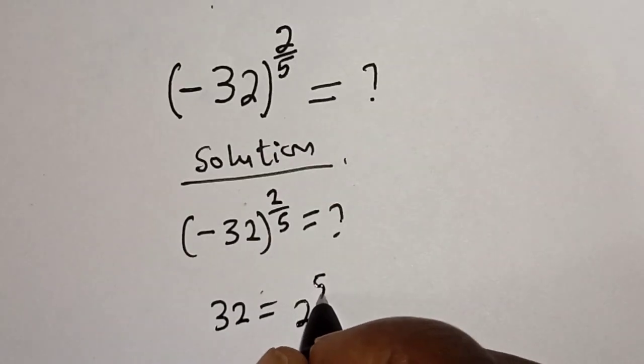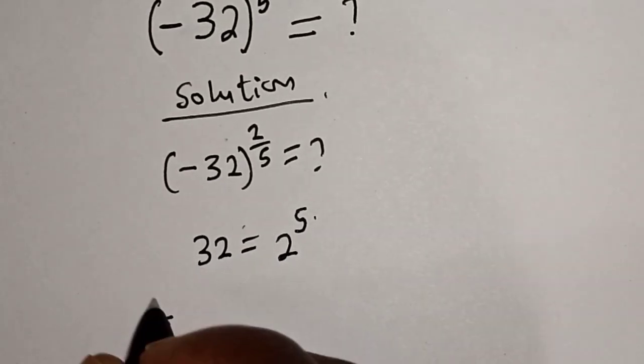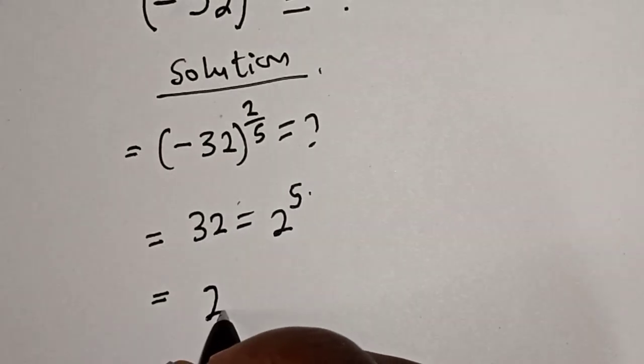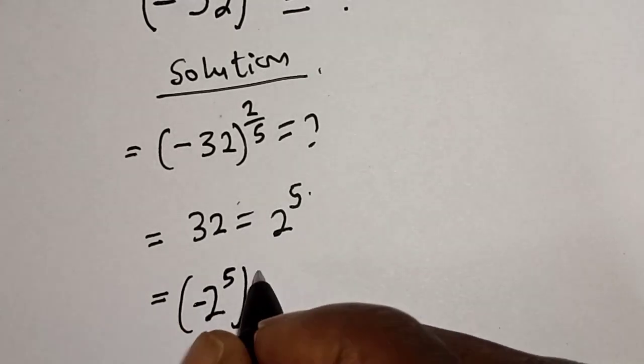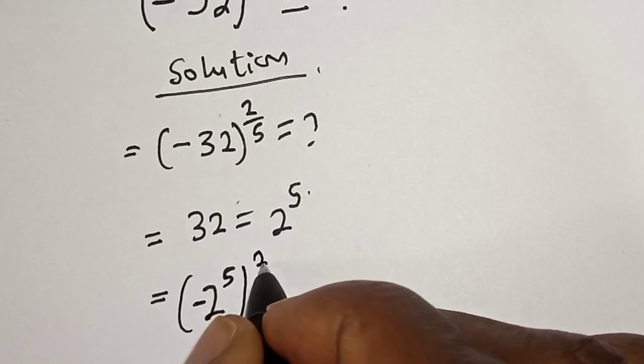This is equal to 2 to the power of 5, minus, raised to power 2 over 5.